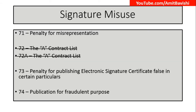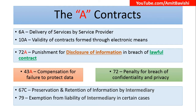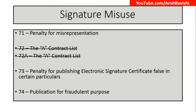Part 4 — Signature misuse. Before going to signature misuse, we already dealt with a contract list covering sections 72 and 72A. But the series runs 71, 72, 72A, 73, and 74, so we must not miss those. Let's recall sections 72 and 72A. Section 72 was for penalty for breach of confidentiality and privacy of information acquired under the Information Technology Act. Section 72A was punishment for disclosure of information in breach of a lawful contract. Now we move on to sections 71, 73, and 74.